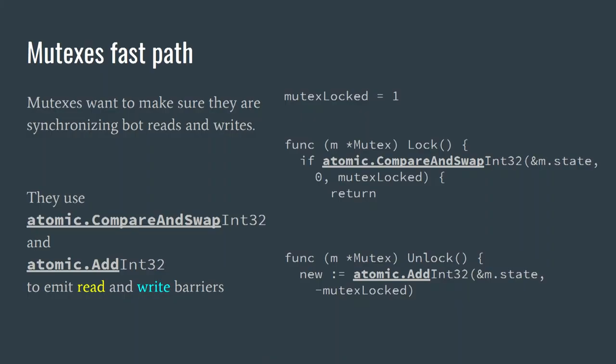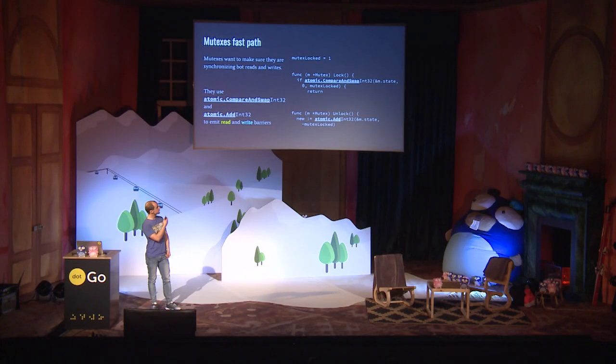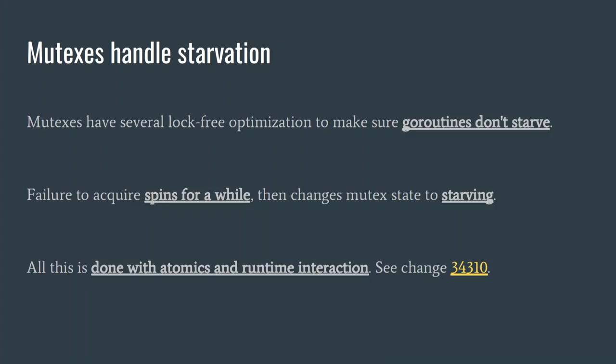And that is the entire hot code of a mutex in Go. This is one of the reasons you shouldn't use atomics directly — if you lock, acquire, and unlock the mutex, that's what you're going to do: just compare and add. But mutexes don't just do that. If you try to compare-and-exchange and you can't because someone else is holding the mutex, it spins for a while and retries. And if it doesn't succeed for a while, it goes into starvation mode. All of that is done in a lock-free, very efficient way that grants fairness.